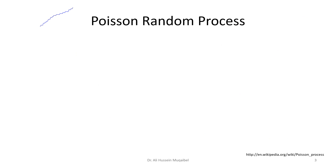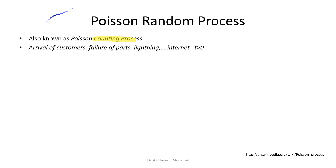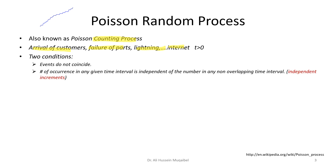The Poisson random process is also called the counting process because it counts the number of occurrences — arrival of customers, failure of parts, lightning, number of Google searches, number of hits. These are all governed by the Poisson random process. The basic assumptions when deriving the process are: events do not coincide, and the number of occurrences in a given time interval is independent from other intervals. So we have independent increments.